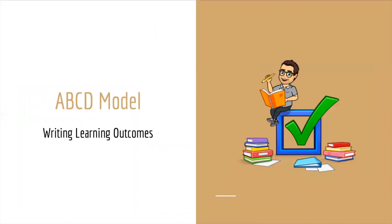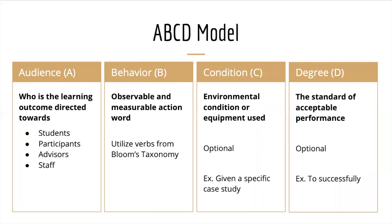Next you'll utilize the ABCD model to actually write learning outcomes. The A is audience — who is the learning outcome directed towards? Is it students, participants, advisors, or staff? It's really important to know your audience in order to write learning outcomes specific to the program or curriculum that you're writing.